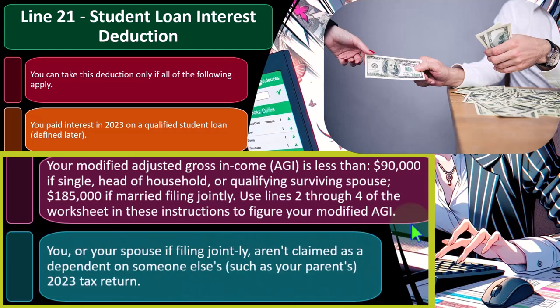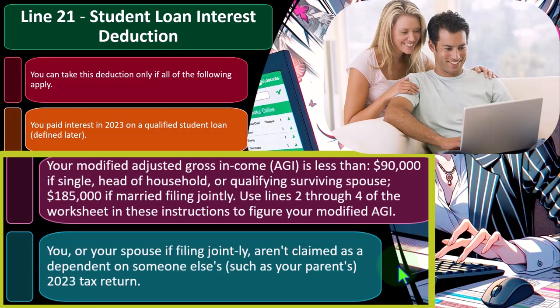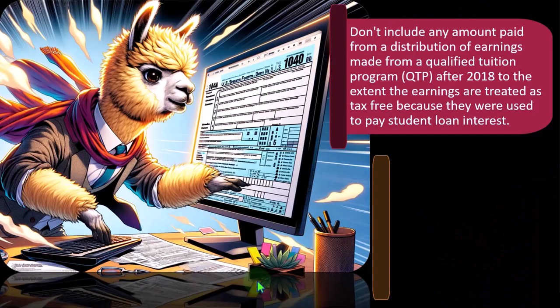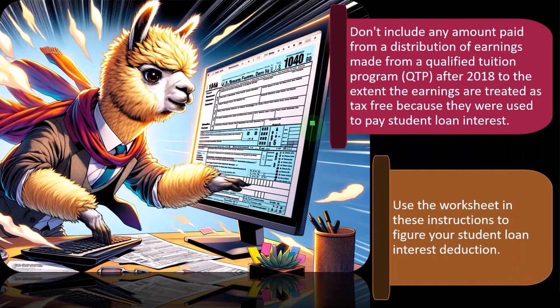We'll talk more about that in the software example in a future presentation. So you or your spouse, if filing jointly, aren't claimed as a dependent on someone else's, such as your parents', 2023 tax return. Also, don't include any amount paid from a distribution of earnings made from a qualified tuition program — that's a QTP — after 2018, to the extent the earnings are treated as tax-free because they were used to pay student loan interest.